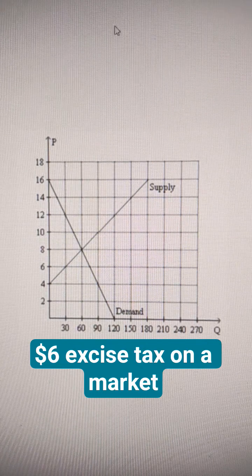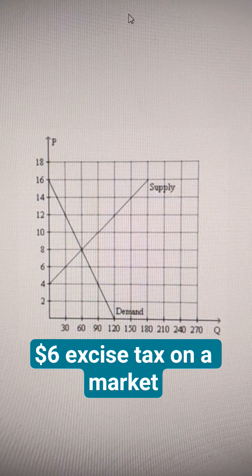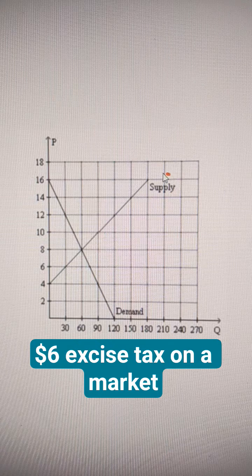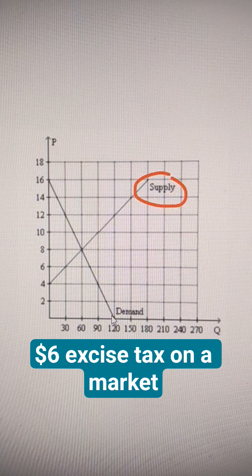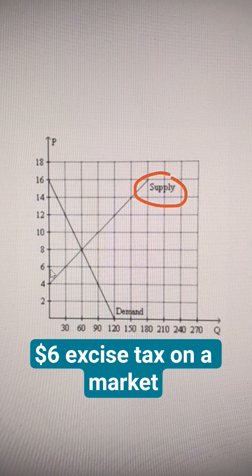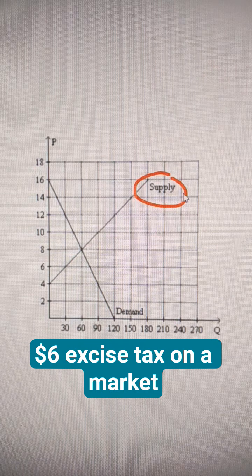Here we're thinking about a $6 excise tax. So what that means is we're either going to tax the sellers and shift their curve up, or we're going to tax the buyers and then shift their curve down. It's more common to just tax the sellers.